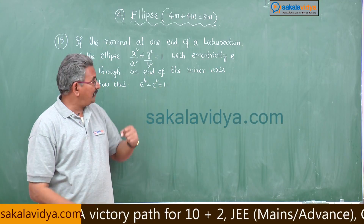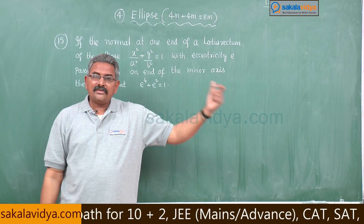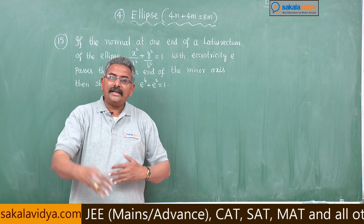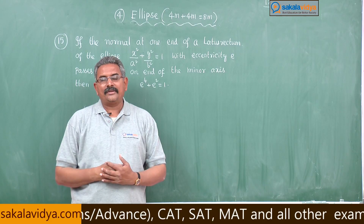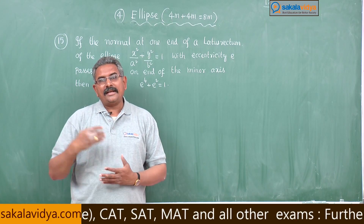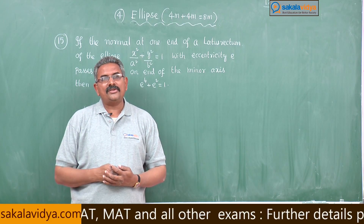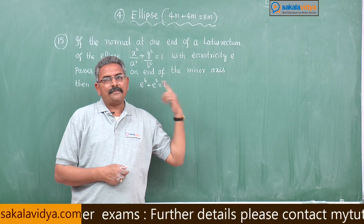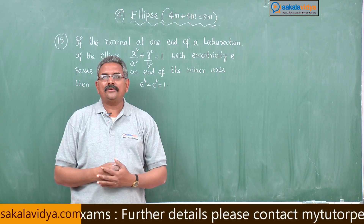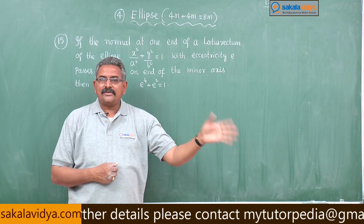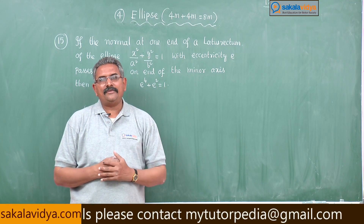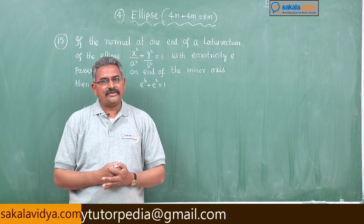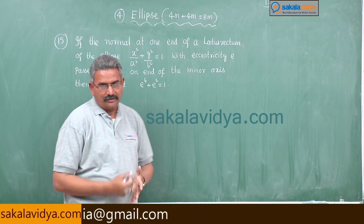According to the problem, the equation of the normal passes through one end of the minor axis. One end of the minor axis is (0, ±b). According to this problem it passes through (0, -b), so substitute x = 0 and y = -b to get the required condition.